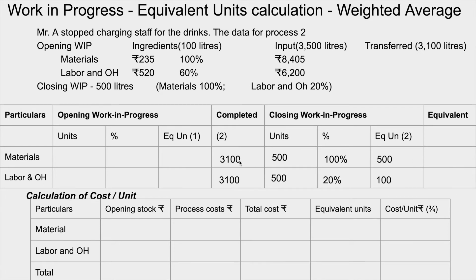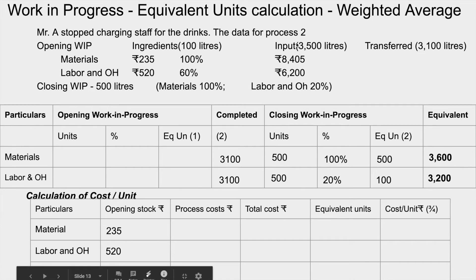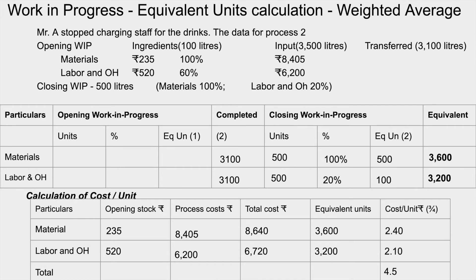Equivalent units under weighted average: materials = 3,100 + 500 = 3,600; labor = 3,100 + 100 = 3,200. For cost, we average opening stock cost plus current process costs. Opening stock values are 235 for material and 520 for labor. We add process costs to get total cost, then divide by equivalent units to get cost per unit.